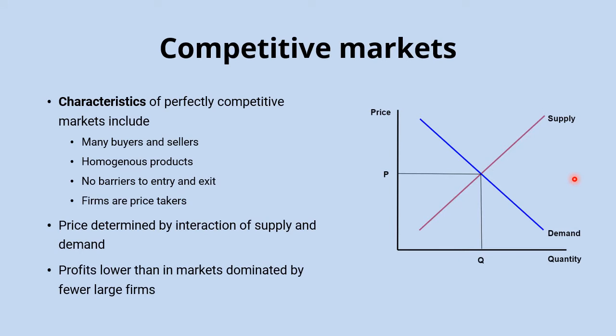This means profits are going to be much lower than in markets dominated by fewer large firms. If there are any excess profits to be made by firms in perfectly competitive markets, they will attract new firms into the market. Because there are no barriers to entry, those new firms can easily come in and compete away those profits, which keeps prices down at much lower levels than in markets dominated by fewer large firms with generally higher barriers to entry and exit.